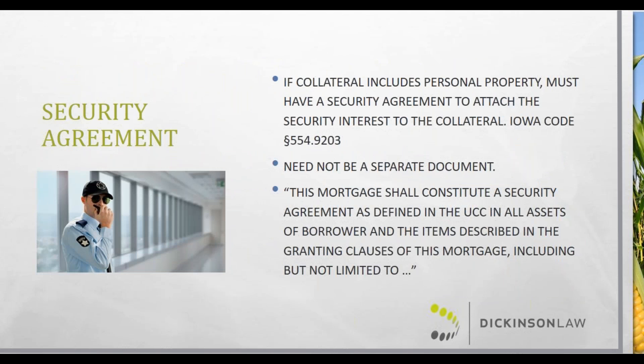The next item is more for loans dealing with personal property. If your collateral includes personal property, you must have a security agreement in order to attach that security interest. To perfect a security interest, you need a security agreement, a proper description of the collateral, and it must be perfected in whatever form is required for the type of assets you have. A security agreement is your first step in protecting yourself when collateral is personal property.